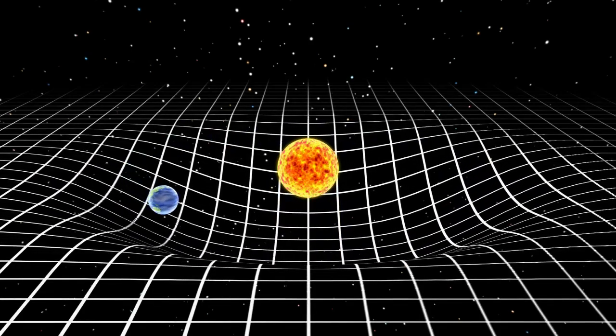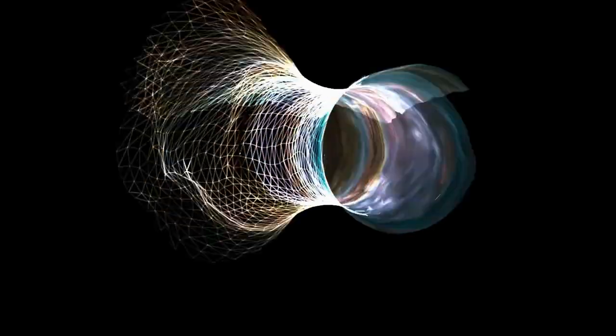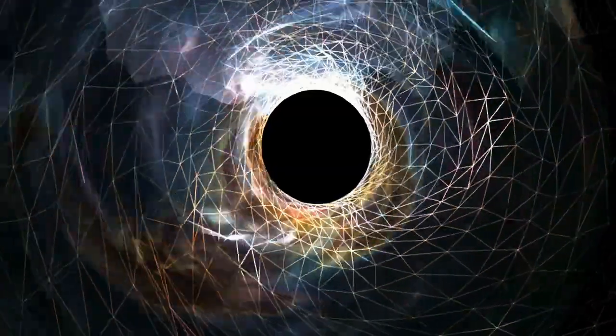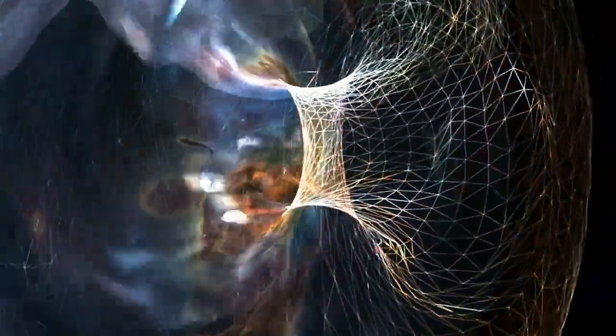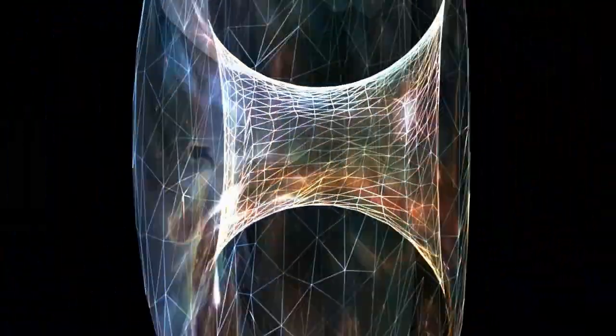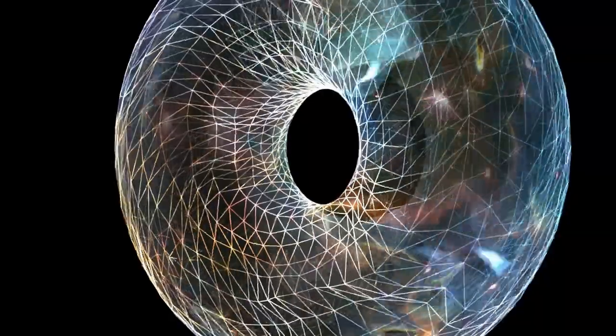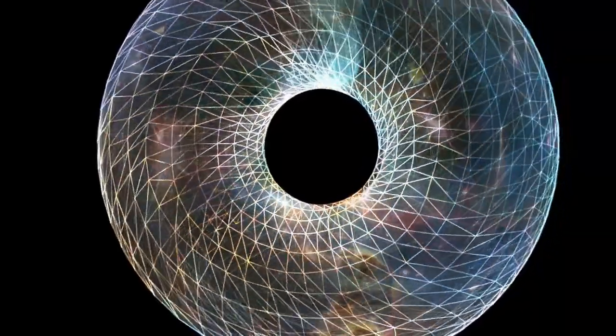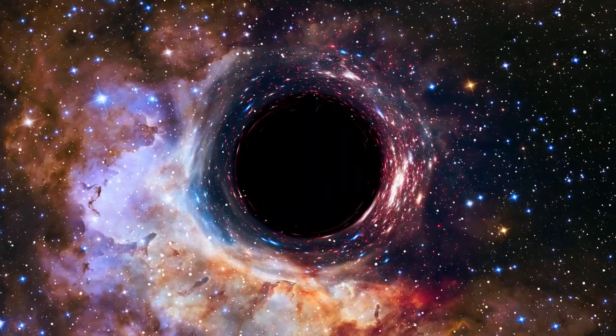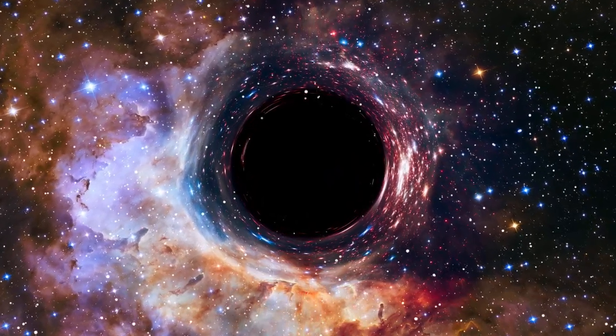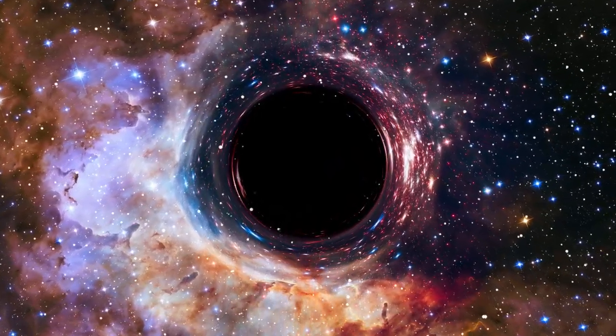To visualize this, imagine space-time as a flexible rubber sheet. When you place a heavy object, like a bowling ball, on the sheet, it creates a dip or curve. Now, if you roll a smaller ball, like a marble, across the sheet, it will move toward the heavier object not because of a force, but because the curve in the sheet guides its path.